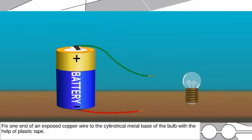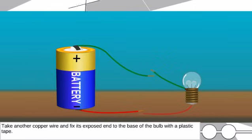Fix one end of an exposed copper wire to the cylindrical metal base of the bulb with the help of plastic tape. Take another copper wire and fix its exposed end to the base of the bulb with a plastic tape.